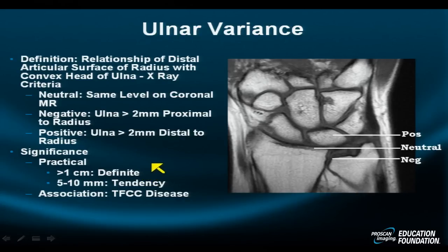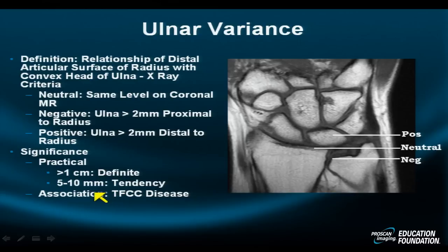But more importantly, we look for the secondary signs of the various abutment and impingement syndromes that can result from these abnormalities and variance. If the discrepancy between these two on MR is 5 to 10 millimeters, we'll say that the patient has a tendency towards negative or positive variance posture.